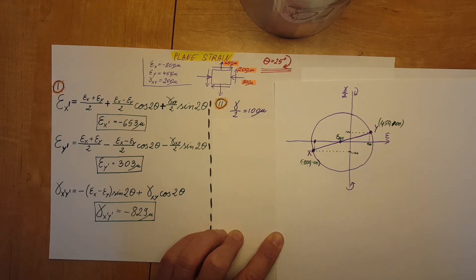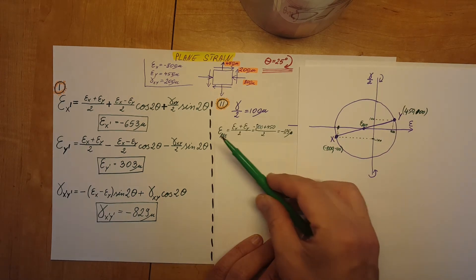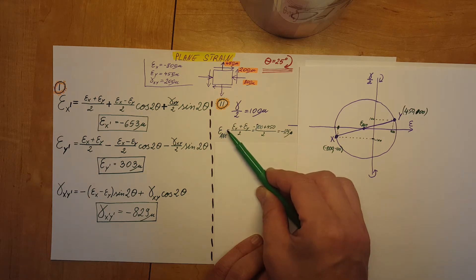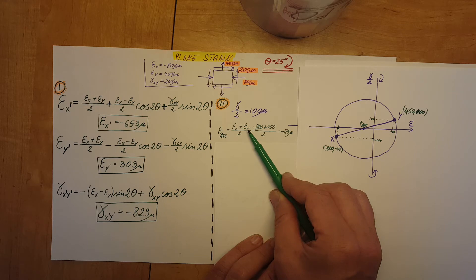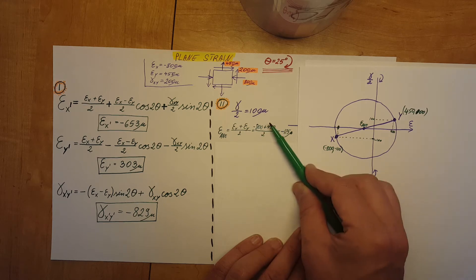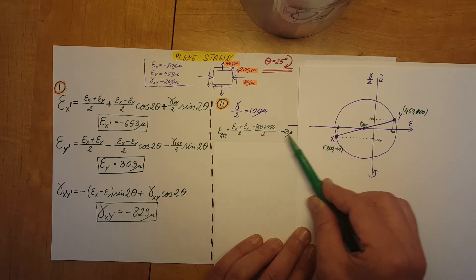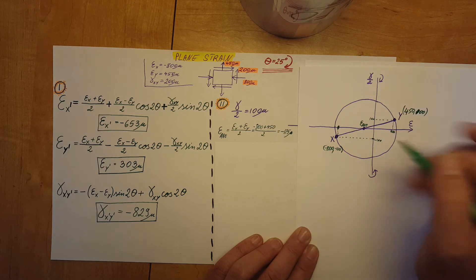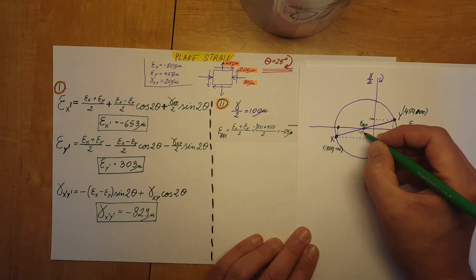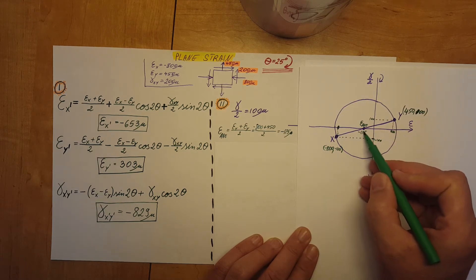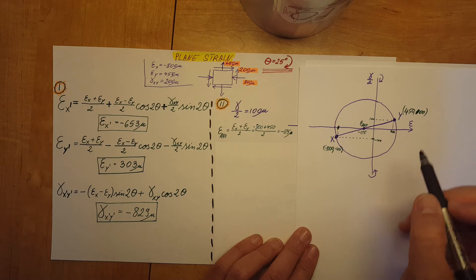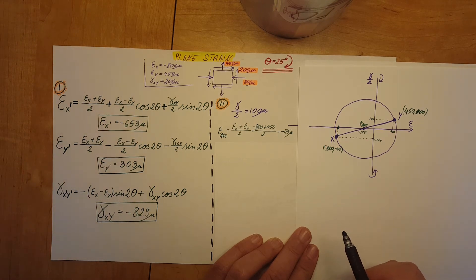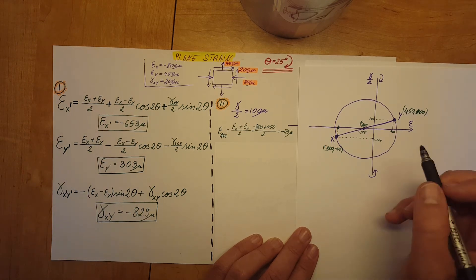Our average normal strain equals normal strain in X plus normal strain in Y divided by 2. Plugging in our values: negative 800 plus 450 divided by 2 gives us negative 175 microns. So epsilon average is negative 175 microns.